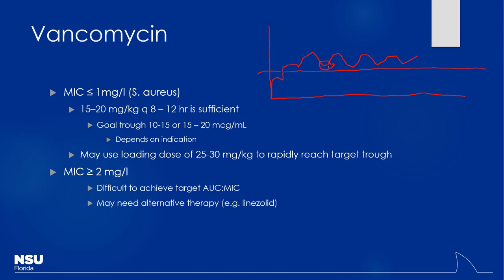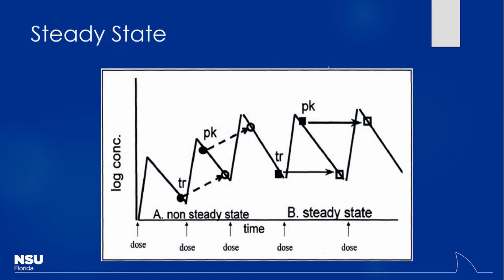When do you get the trough level? Vancomycin takes four to five half-lives — about three to four doses — to reach steady state. If a patient gets started on vancomycin in the ER and is admitted, you don't want to draw the level too soon. Usually you wait until before the third or fourth dose — before the fourth dose gives the most accurate level. If you get it too soon, it'll come back too low, you'll unnecessarily bump the dose, and then the next level at steady state could come back too high, causing toxicity.